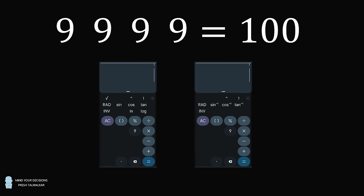Inverse sine, inverse cosine, and inverse tangent do have a negative one, but they're not really digits — these are more inverse function notations. We're going to write them as arcsine, arccosine, and arctangent. So here's the puzzle: you have this calculator, you can use the buttons that are shown, you have to press the button 9 exactly four times, and you want the result to show 100.